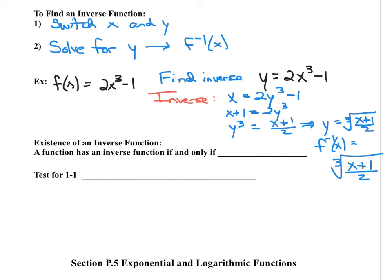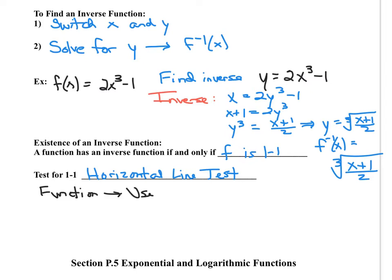A function has an inverse function if and only if the original function f is a one-to-one function. To test whether a function is one-to-one, we use the horizontal line test. To test if something is a function, we use the vertical line test. If something is a one-to-one function, it first has to pass the vertical line test to be a function, and then it has to pass the horizontal line test to be one-to-one.